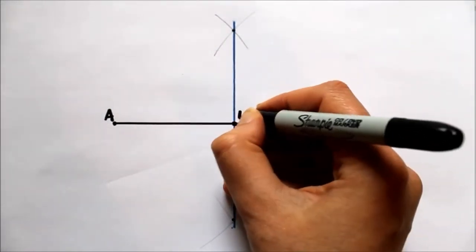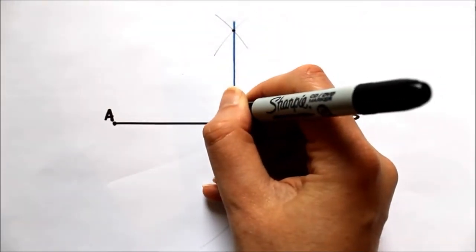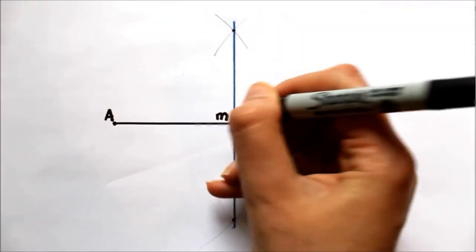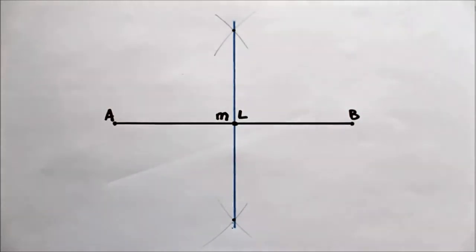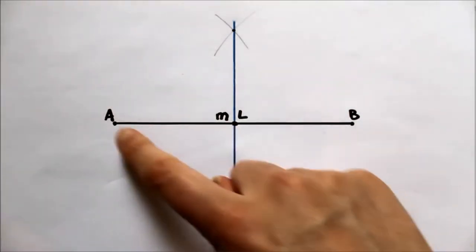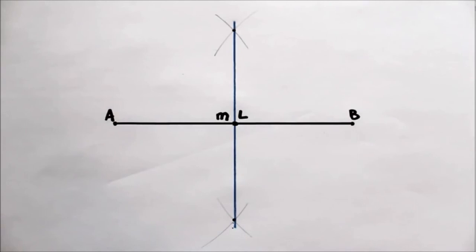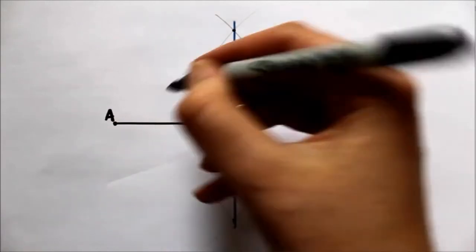So because it's perpendicular it means it's creating a right angle. We call the point of intersection M. So M is the midpoint of AB. So AM is equal to MB.